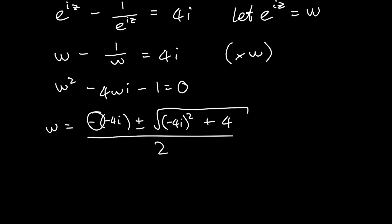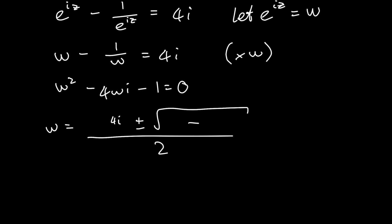Distributing the negative gives positive 4i in the numerator. Then negative 4i squared is negative 4 squared times i squared, which is 16 times negative 1, giving negative 16. So inside the square root we have negative 16 plus 4, which is negative 12.